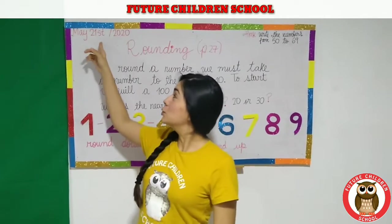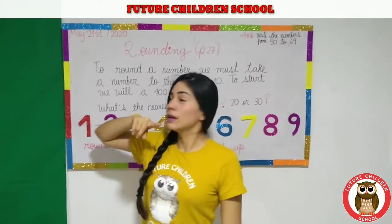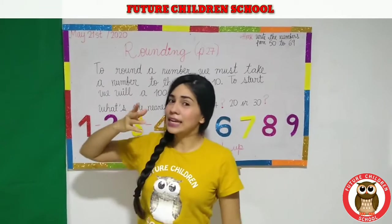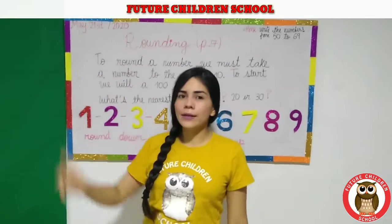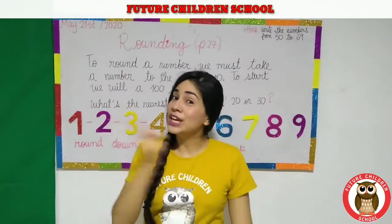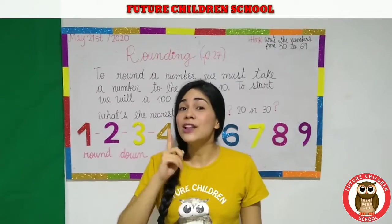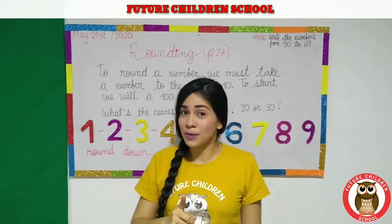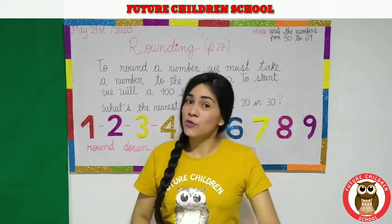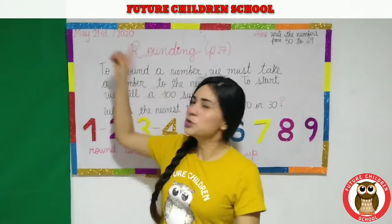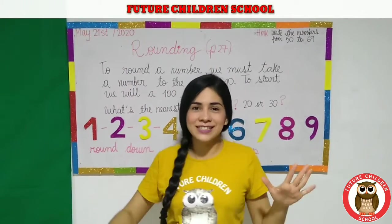Today is May 21st. Pay attention, guys — can I say 'May 21st'? No, not in English. You have to use ordinal numbers. Remember, ordinal numbers — this is the topic from last week. May 21st. Very good. Today is Thursday.